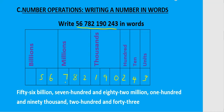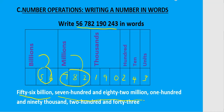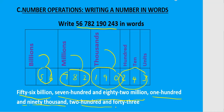Once the number is placed in the table, you can read it as: 56 billion, seven hundred and eighty-two million, one hundred and ninety thousand, and two hundred and forty-three. Putting the number into the table makes it much easier to write it in words.